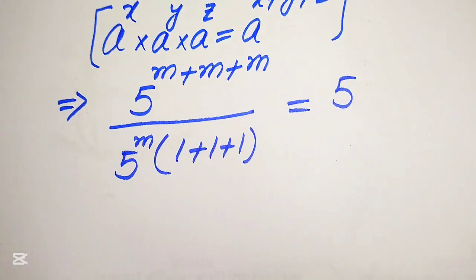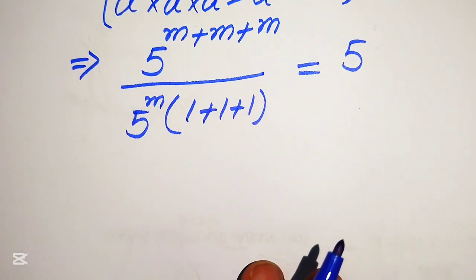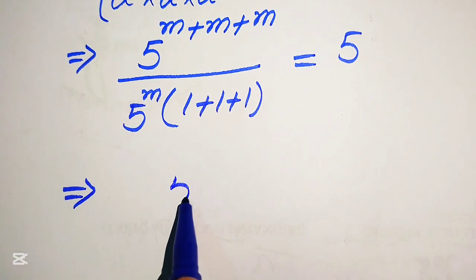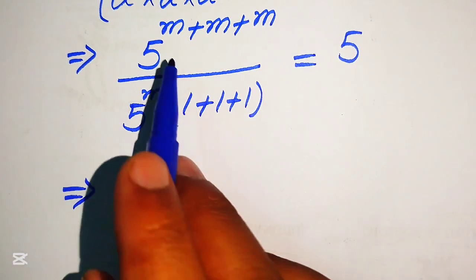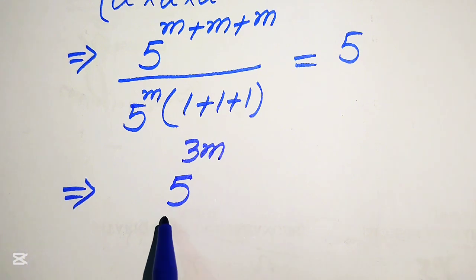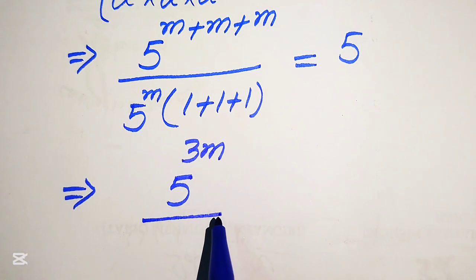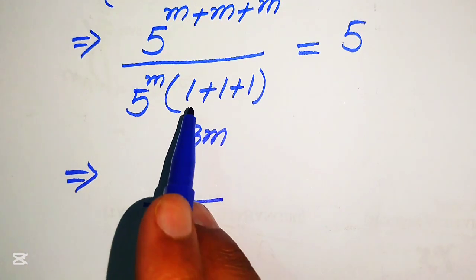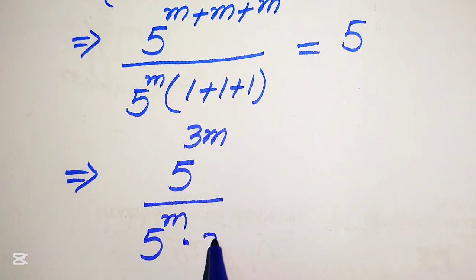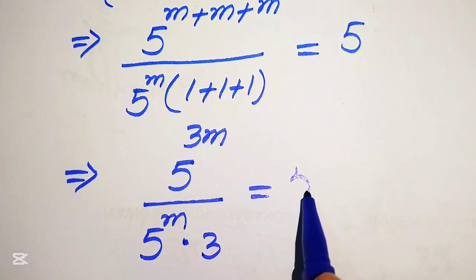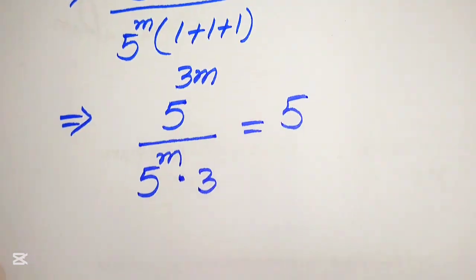In the next step, further simplification gives 5 to the power of 3m, divided by 5 to the power of m multiplied by 3, and this whole expression equals 5.